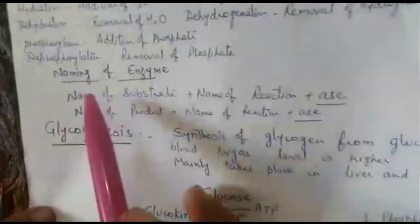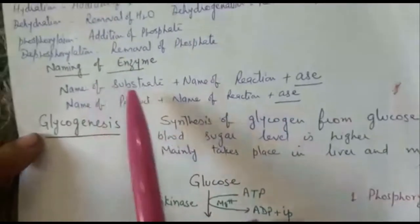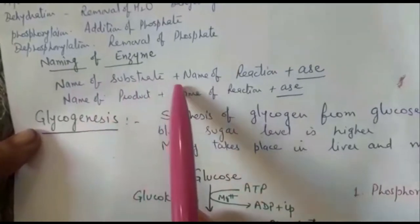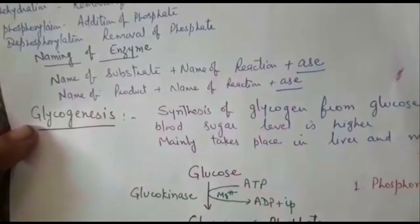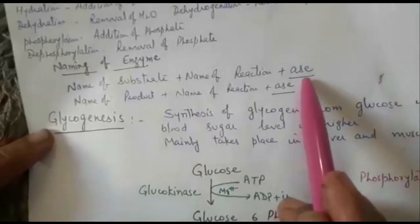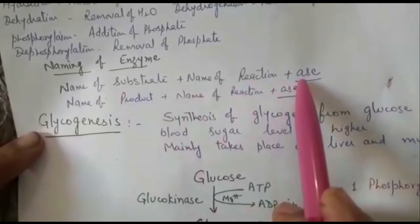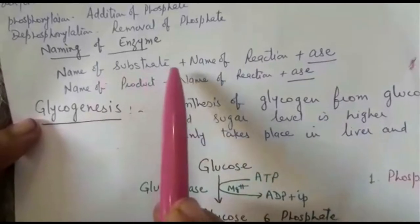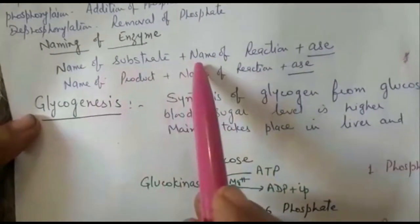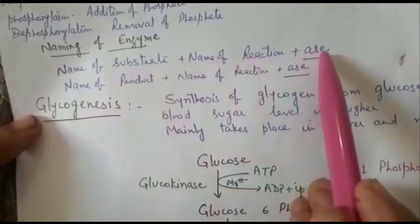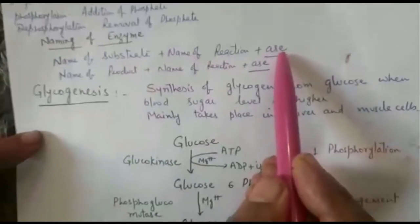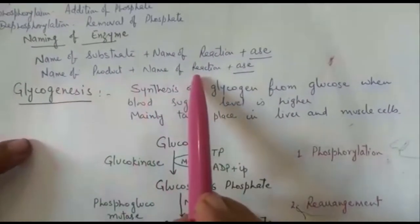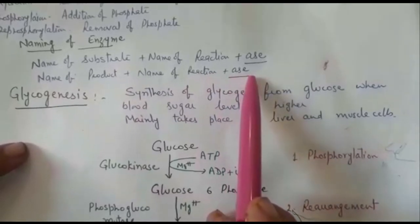For the naming of enzymes, the majority of enzymes are named by taking the name of the substrate, plus the name of the reaction, and placing the suffix '-ase' at the end. Some enzymes are named after taking the name of the product plus the name of the reaction and placing the suffix '-ase'. This will become clear when we study the different processes.